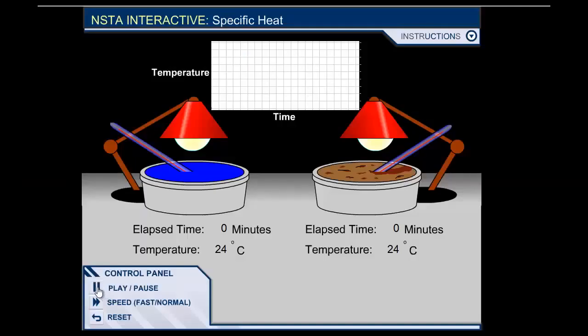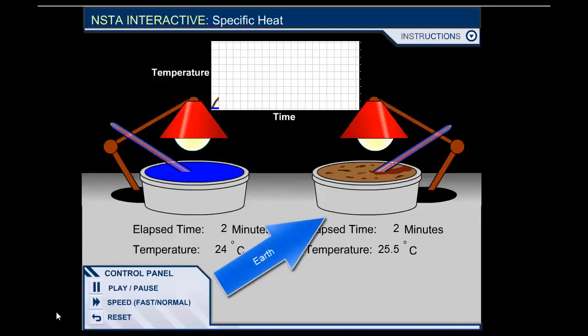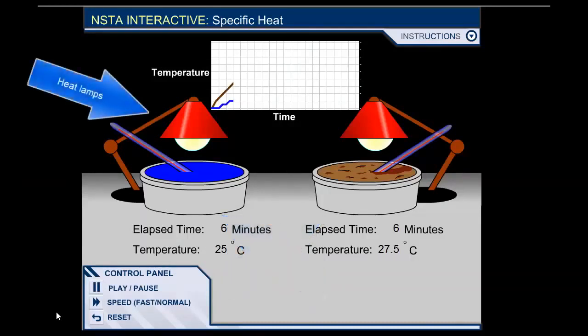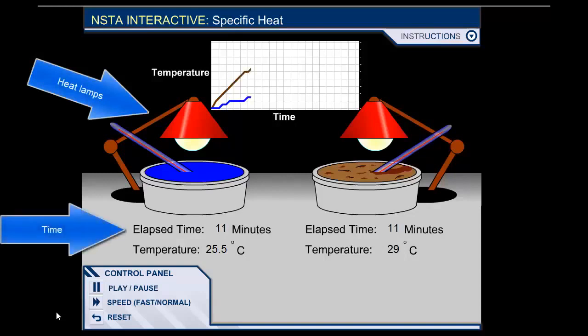For instance, here's a little simulation. It shows a sample of earth and a sample of water with the same mass, both absorbing the same amount of energy from heat lamps. Notice that the temperature of the water rises more slowly.